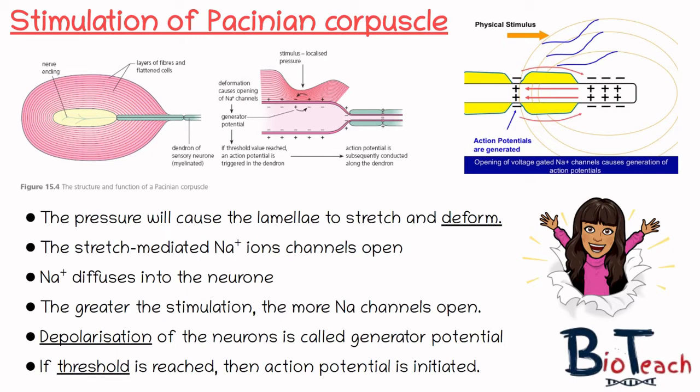In my video on action potential and resting potential, I talk about the threshold being reached. The threshold is around minus 55 millivolts minimum that it has to reach, and as soon as that's reached the action potential is then generated.